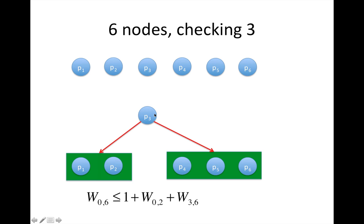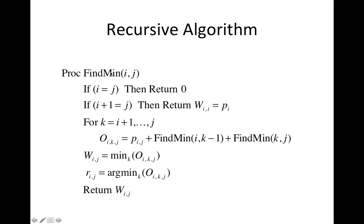And similarly, if we choose three, we get one plus w02 plus w36. So we can write this whole thing as a recursion.